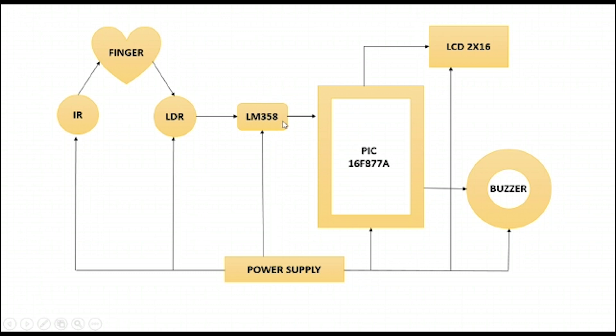LM358 which is an op-amp, PIC microcontroller, LCD, and a buzzer. Let's see how it works. When you place your fingertip in the heartbeat sensor, an IR signal is passed to it through the IR LED and this signal reflected by the blood cells will be detected using the LDR and its output is given to the op-amp.